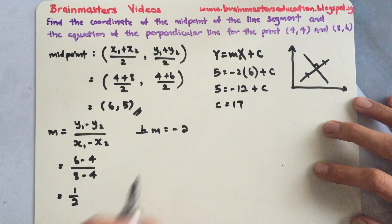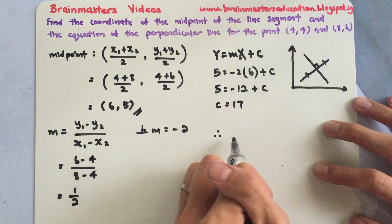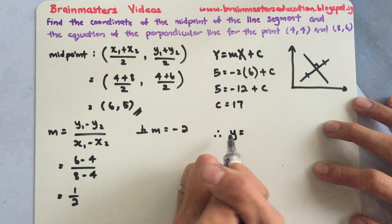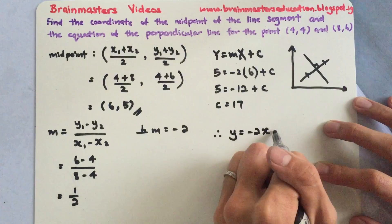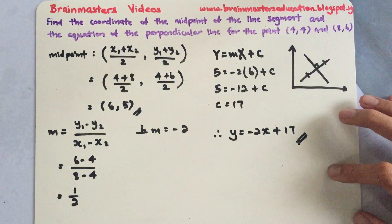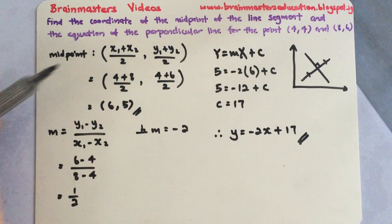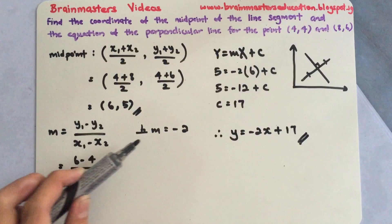So now we know already. Therefore, my equation of my perpendicular line will be y equals negative 2x plus 17. So here you have your midpoint, you need to know the formula, the gradient, and the perpendicular gradient.